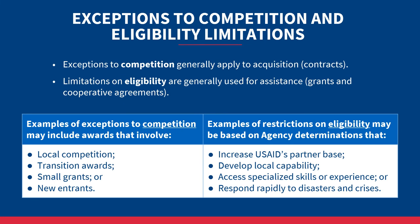USAID makes competition a part of every acquisition and assistance award solicitation. However, there are a few exceptions, which must be specific and well-documented. There are two separate concepts to bear in mind: exceptions to competition generally apply to acquisition contracts, while limitations on eligibility generally apply to assistance grants and cooperative agreements. Unrestricted eligibility refers to a funding opportunity open to all entities — it is USAID policy to allow all eligible organizations to compete unless there is a strong programmatic rationale to restrict eligibility.